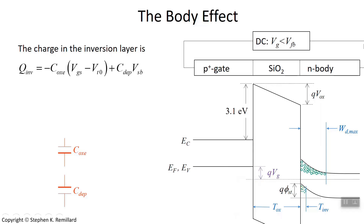In our previous discussion, we treated the source and the body as if they were shorted together and at the same potential. That won't always be practical when you have multiple MOSFETs on a single die — to insist that all of the source terminals be at the body potential can be too restrictive and won't accommodate a lot of circuit designs. So we have to be prepared for a potential difference between the source and the body, and V_sb won't necessarily be zero. It will have the effect of shifting the threshold voltage, and that's the body effect.